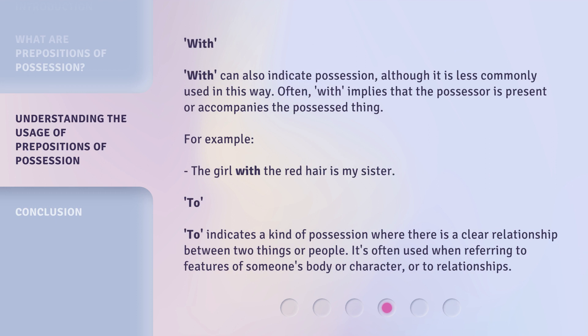"With" can also indicate possession, although it is less commonly used in this way. Often, "with" implies that the possessor is present or accompanies the possessed thing. For example: the girl with the red hair is my sister.